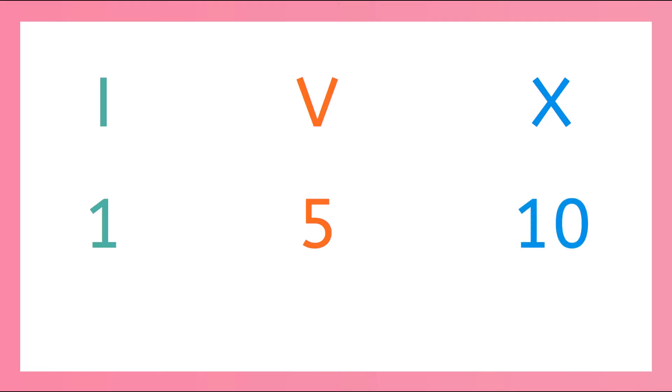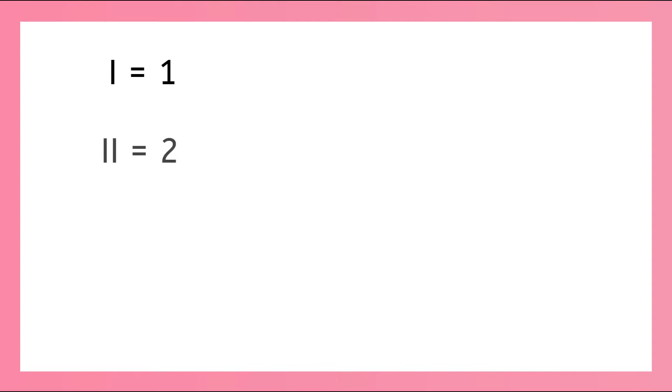Did you know you can use just these three symbols to count to 10? I is 1, V is 5, and X is 10. So how do we count every number to 10 with only these? Let me show you. Here's how we count from 1 to 3 in Roman numerals: 1, 2, 3. Pretty easy, right?